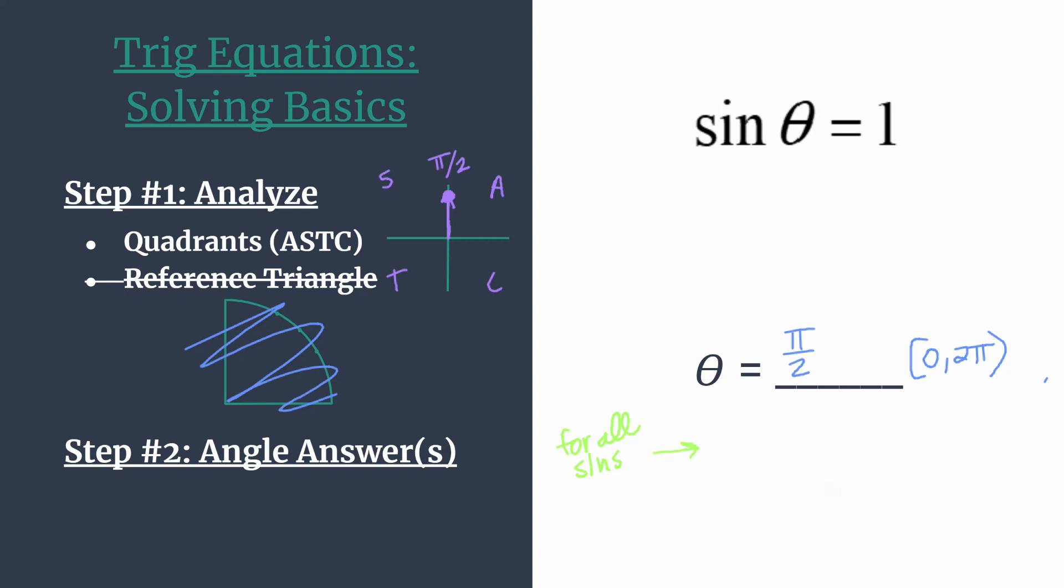And so we basically want to say that our solution is pi over two and also all its coterminal angles. So to do this, we would say theta equals pi over two plus a full rotation is two pi k, where k is an integer.